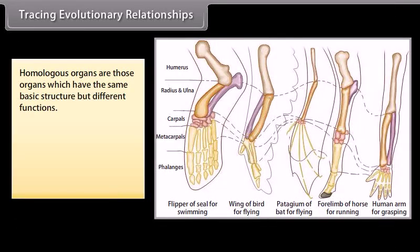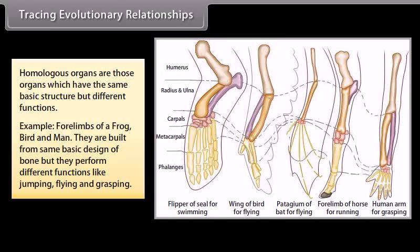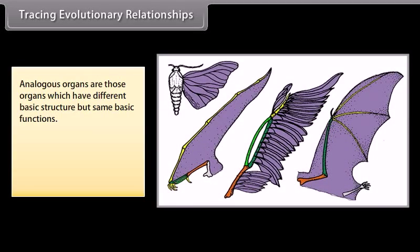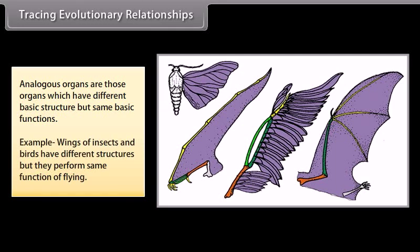Homologous organs are those organs which have the same basic structure but different functions. For example, the four limbs of a frog, bird, and man are built from the same basic design of bone, but they perform different functions like jumping, flying, and grasping. Analogous organs are those organs which have different basic structure but the same basic functions. For example, wings of insects and birds have different structures, but they perform the same function of flying.